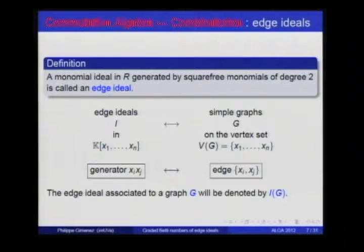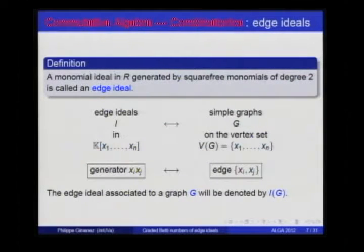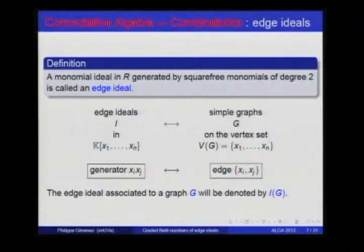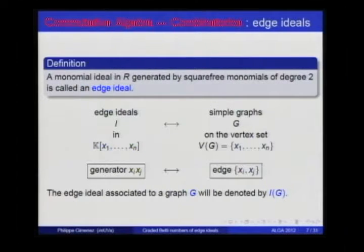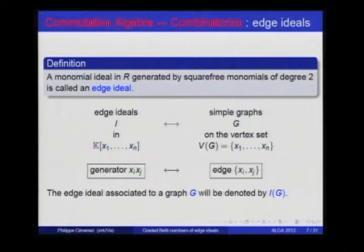The objects we study are square-free monomial ideals of degree 2, called edge ideals, because of their correspondence with simple graphs. The vertices of the graph are the variables in the ring, and whenever we have a generator that is a monomial of degree 2, we put an edge in the graph. Conversely, any simple graph gives an edge ideal. Here we have the algebraic object on one side and the combinatorial one on the other, and we would like to relate both.